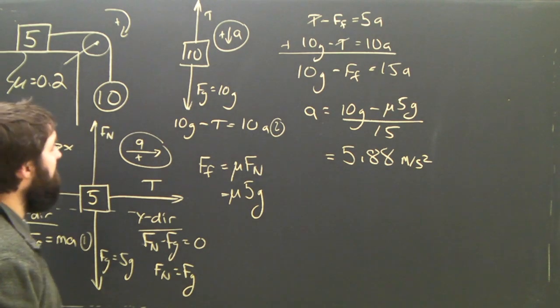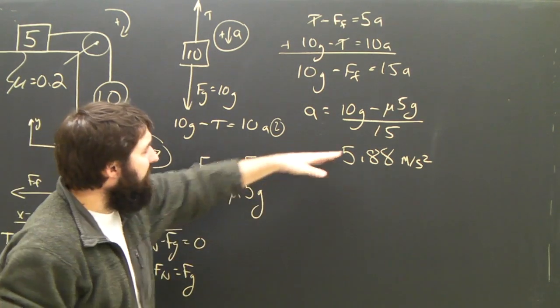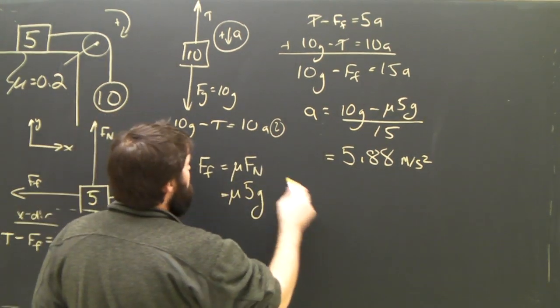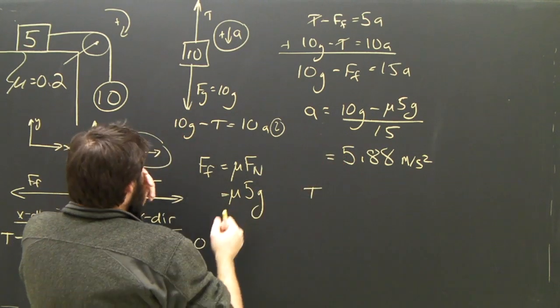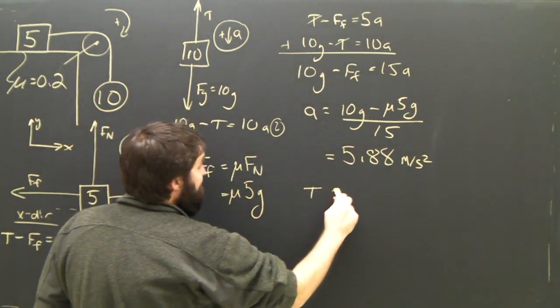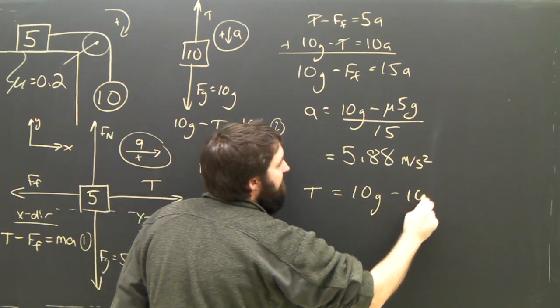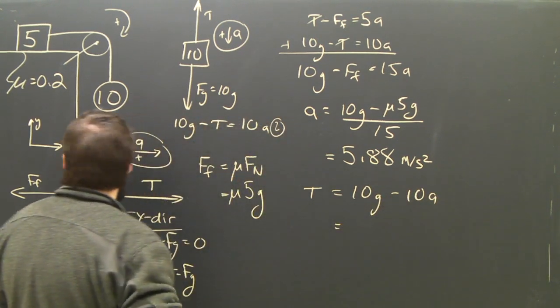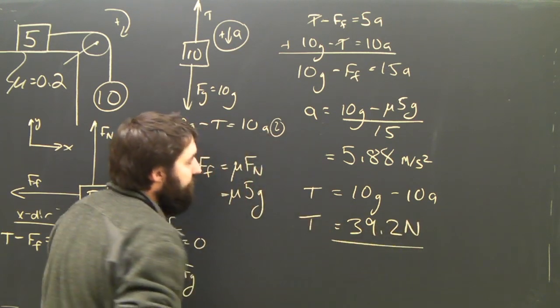To find the tension, I dump back into either equation. This time I'm going to use equation 2 just so I don't have to mess around with mu and point 2s and all these sorts of things. Equation 2 says that, if I flip T over here, tension equals 10g minus 10a. Dumping in my numbers, I get T is 39.2 newtons. And we are done.